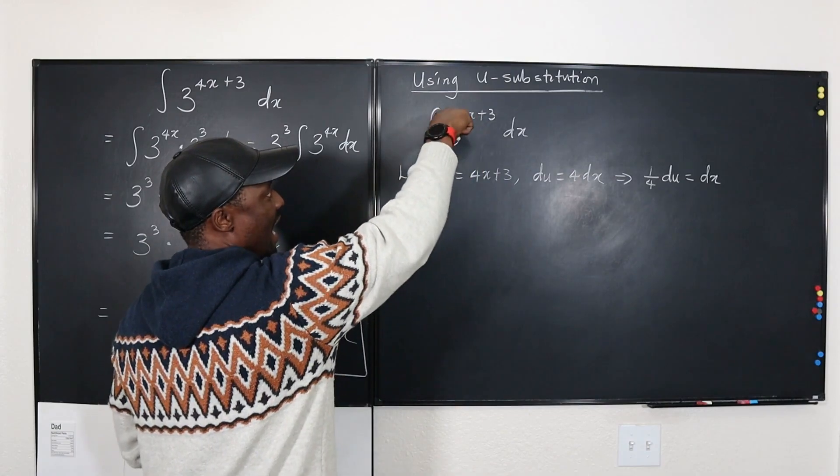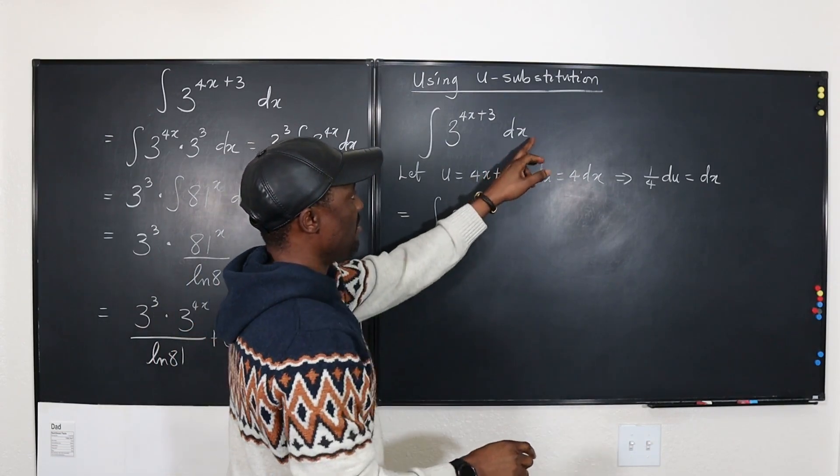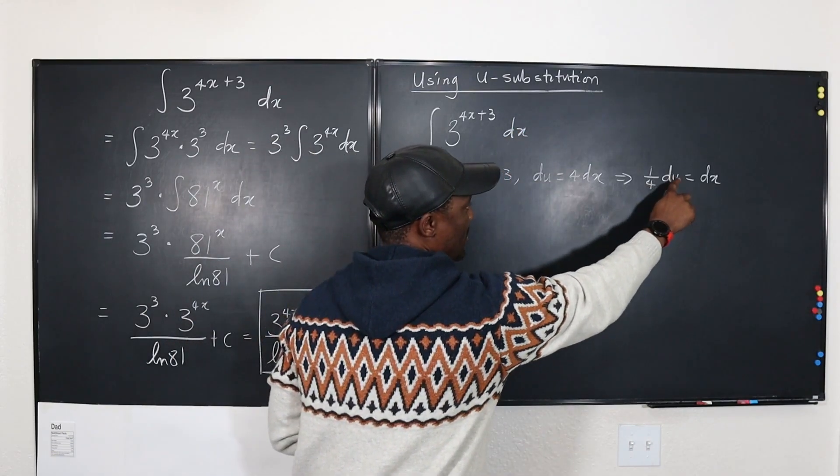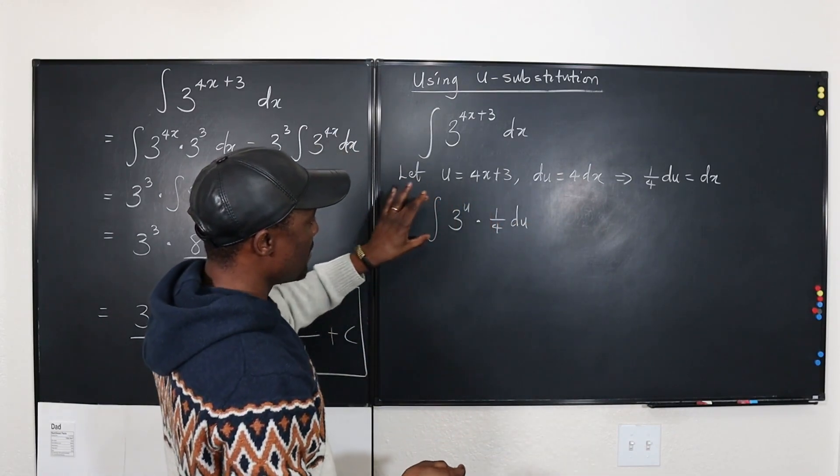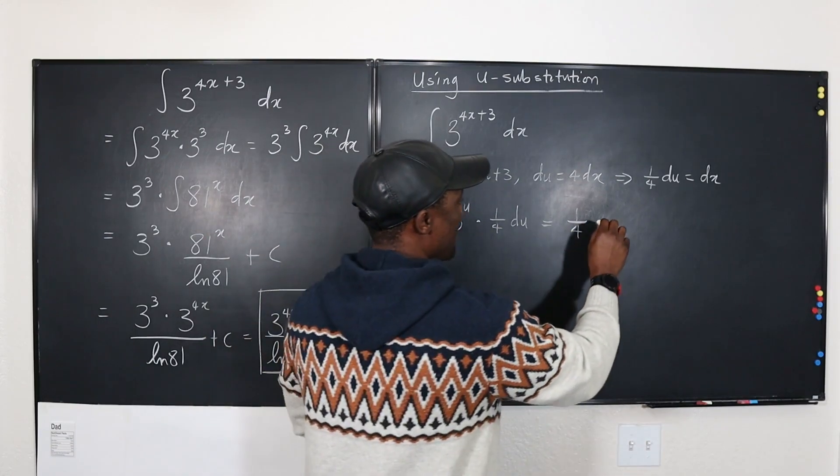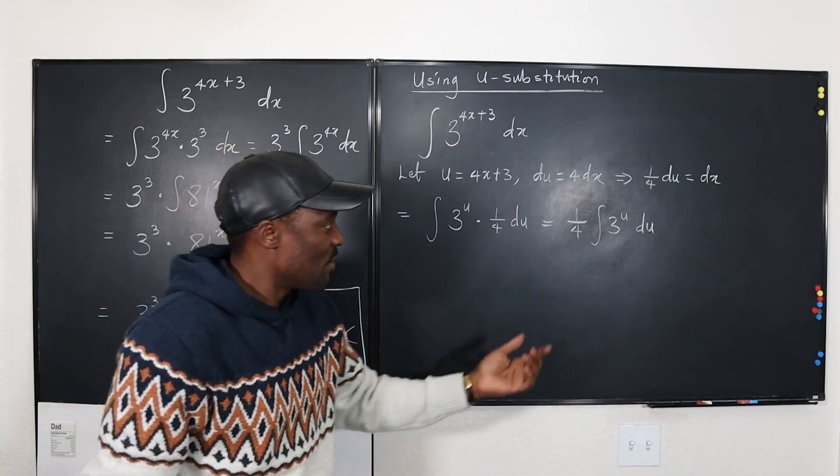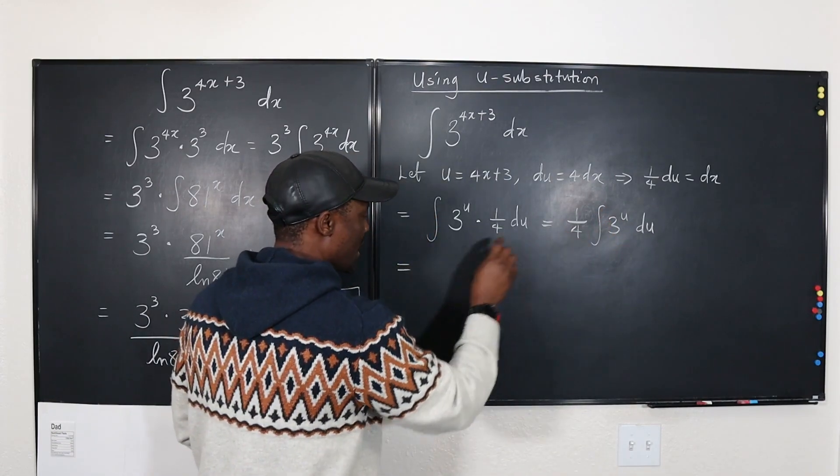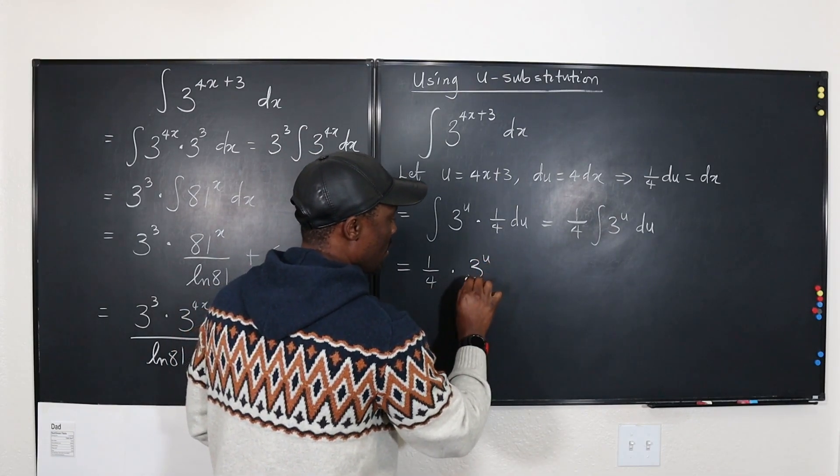So I'm going to come back here and say this integral can be written as the integral of three to the u multiplied by one-fourth du. I can move this one over four to the back so it's going to be one over four times the integral of three to the u du. We're going to apply the same thing, we take the anti-derivative. We're going to have one over four times three to the u over the natural log of three plus c.